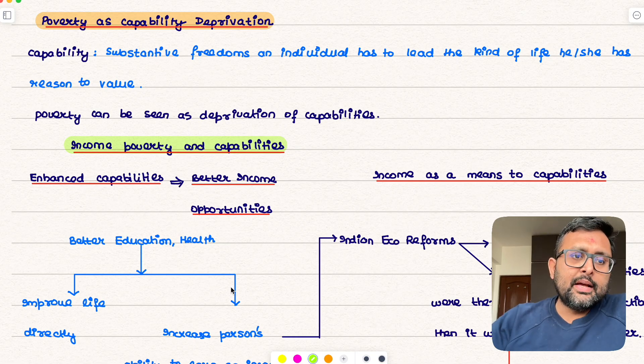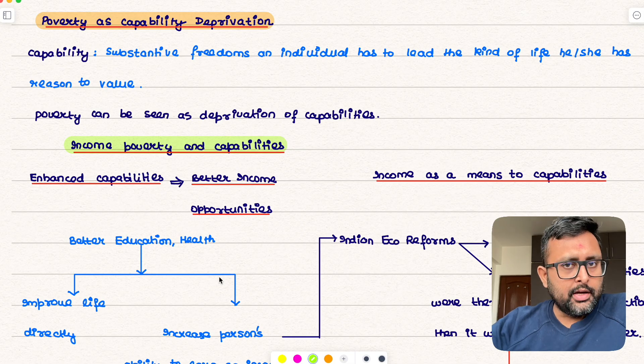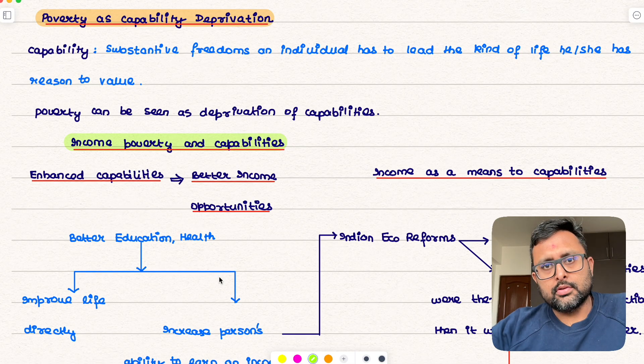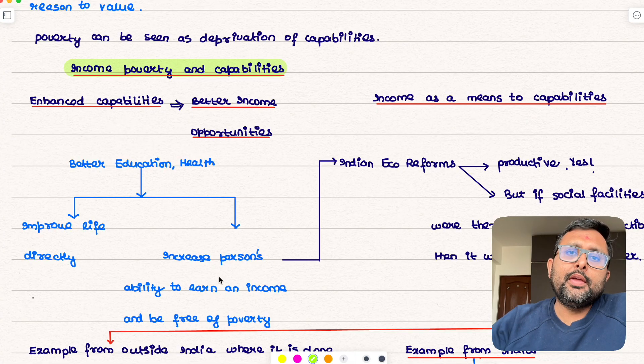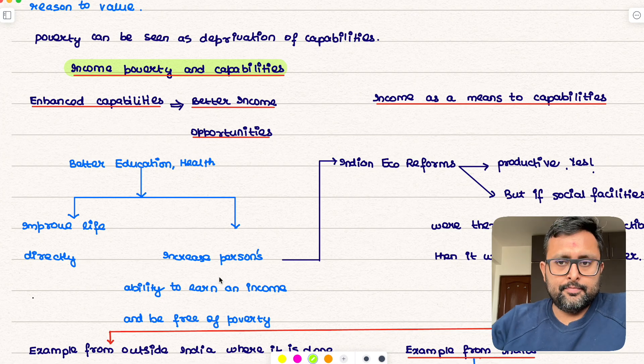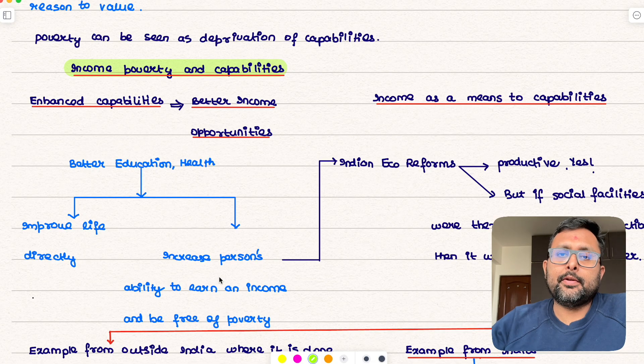First of all, you have to understand this: undeniably this is true that if you have more income you will have more capabilities also. In terms of, for example, maybe if you have more income you have access to better health care. In case of hospitalization you can go to better hospital, better medical care.